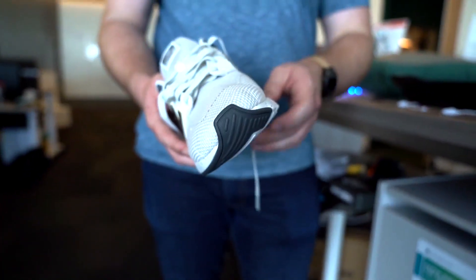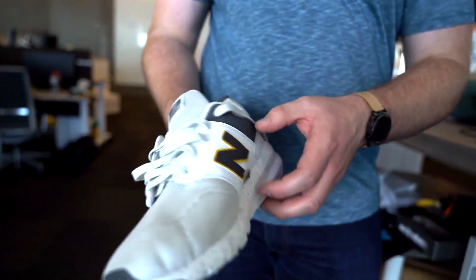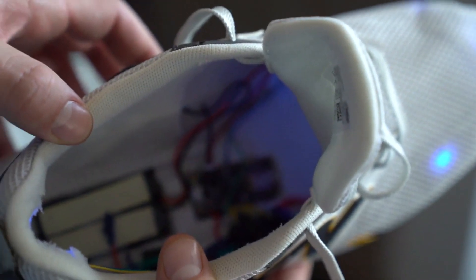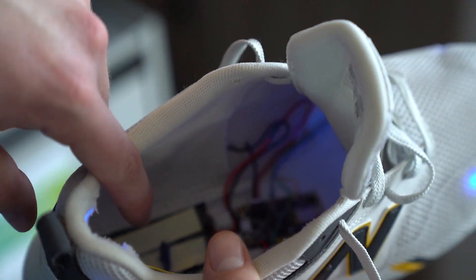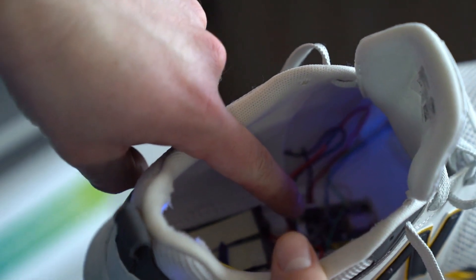We've also used Velostat to create a prototype smart shoe that can record and analyze running patterns. Embedded underneath the sole of the shoe, there are five different pressure sensors that can detect where force is being applied.